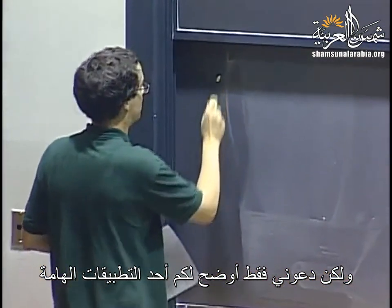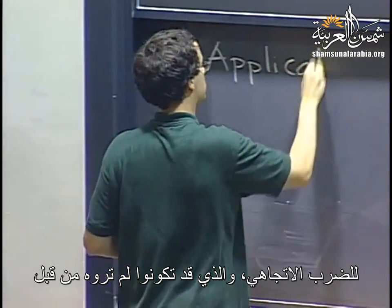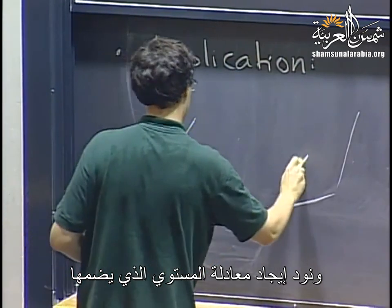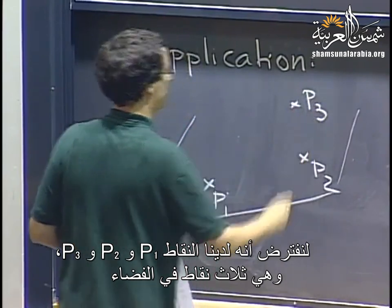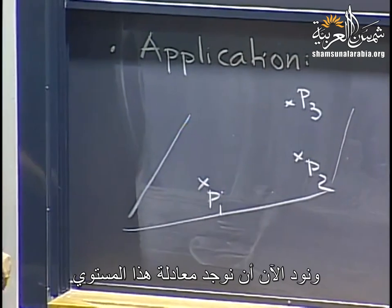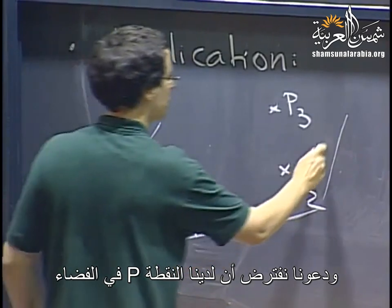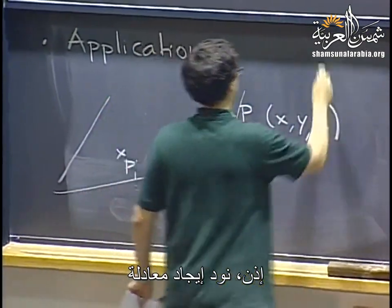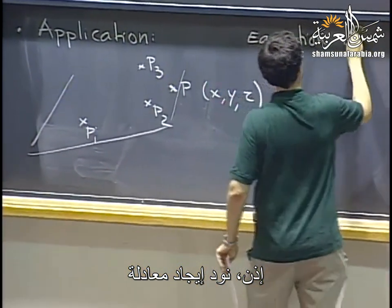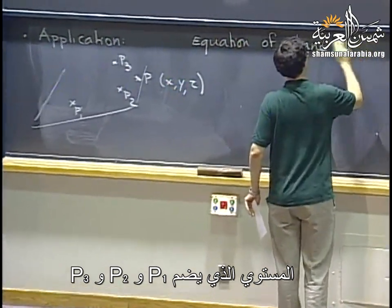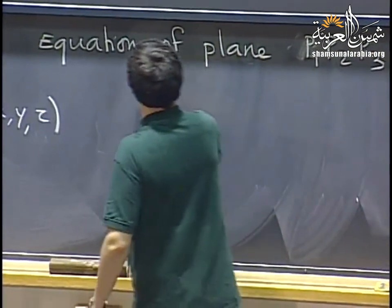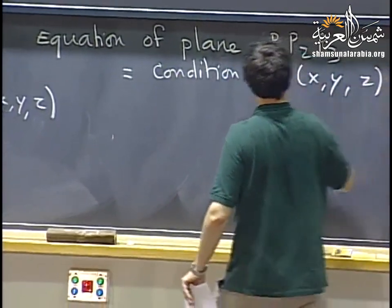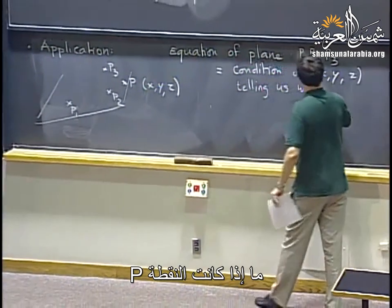Here's an important application of the cross product. Given three points P1, P2, P3 in space, we want to find the equation of the plane containing them. We need a condition on coordinates x, y, z telling us whether a point P is in the plane or not.